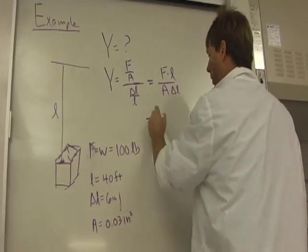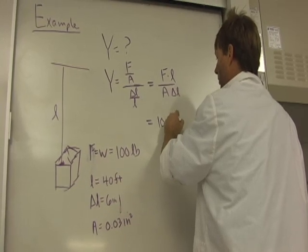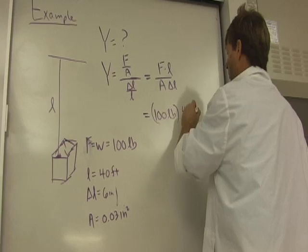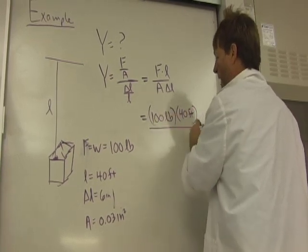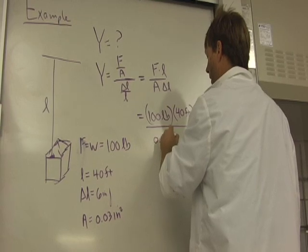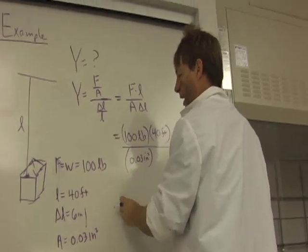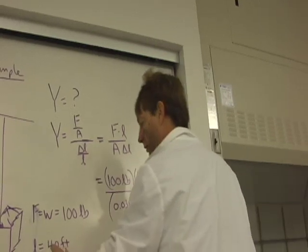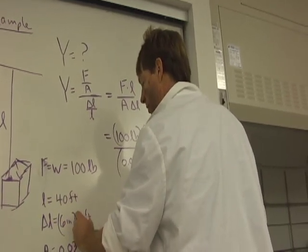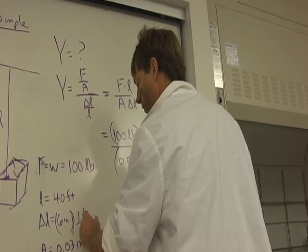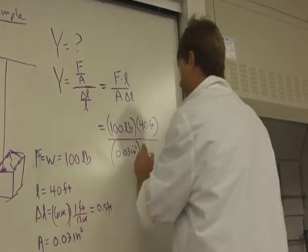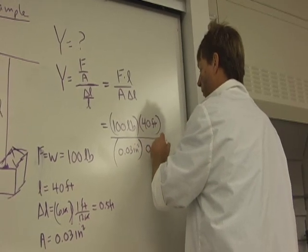We've got a force of 100 pounds, a total length of 40 feet, an area of 0.03 square inches, and a change in length of 6 inches. I want to cancel the feet, so I'll change that. There's 1 foot for 12 inches. That's going to be 0.5 feet.